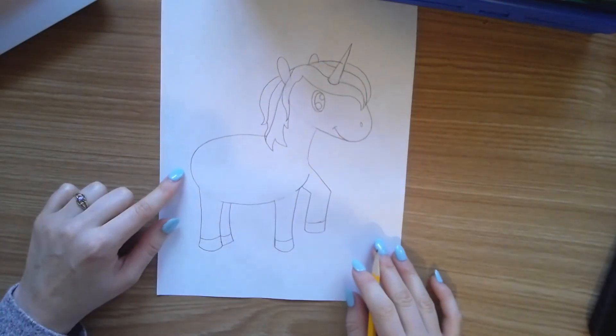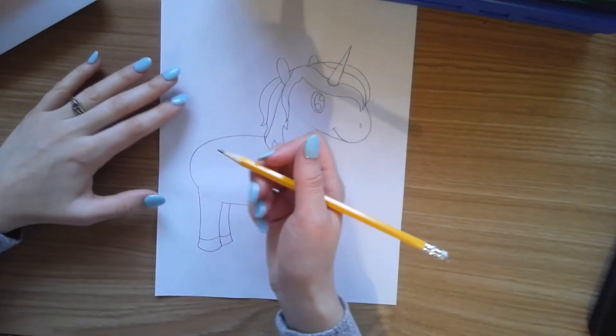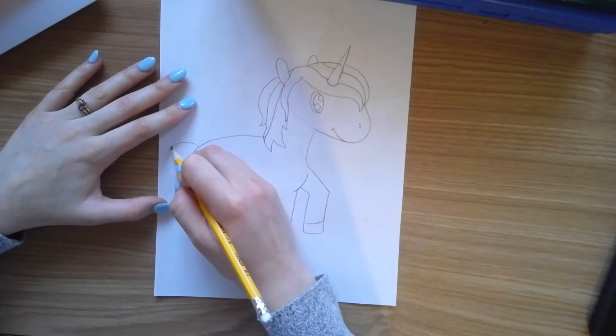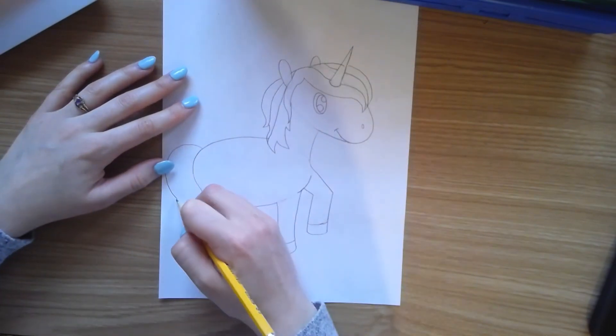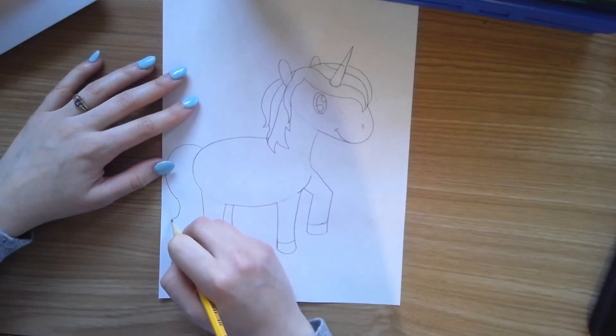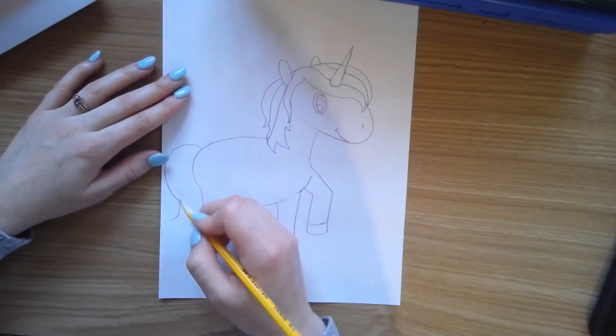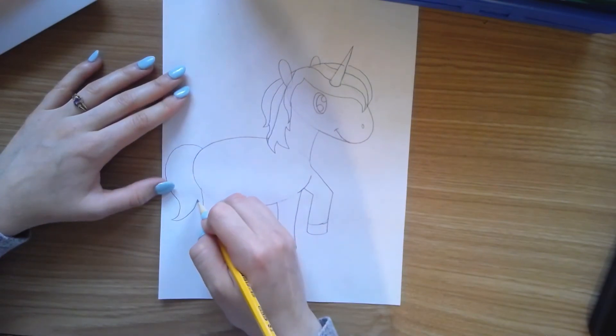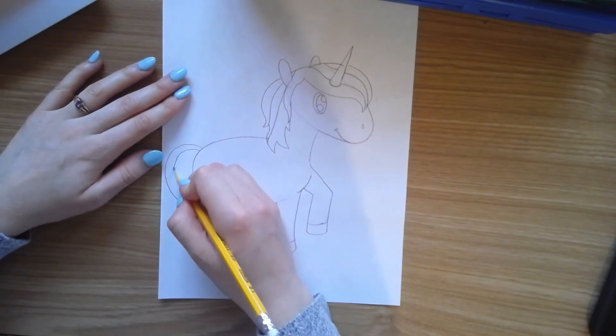Now we're going to work on the tail. You're going to add kind of a C shape, but at the end of the C you're going to make it into almost a curve of an S and then go back up. Then you can draw a couple lines going down.